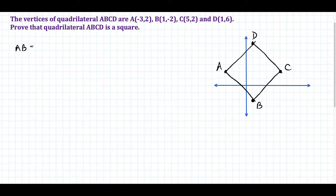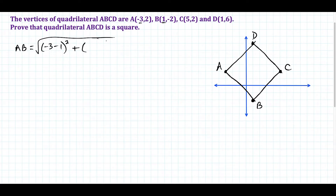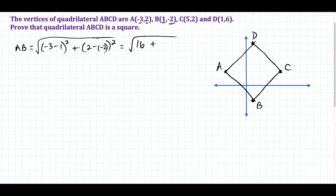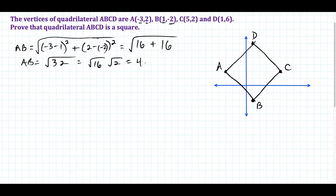First we'll target side AB. Using the distance formula, we take the difference of the x values: negative 3 minus 1, squared, plus the difference of the y values: 2 minus negative 2, squared — all under a square root. When we simplify, we have negative 4 squared which is 16, plus 4 squared which is also 16. So AB equals the square root of 32, which simplifies to 4 square root of 2, since 16 is a perfect square.